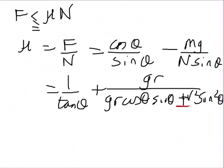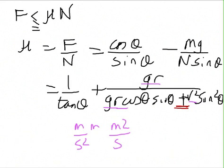That should be a plus sign, to be consistent with the correction we made earlier. Is this plausible? It's pretty messy and hard to check the functional form, but we can check dimensions. We have gr at the top and gr and v² elsewhere. G is m/s², r is metres, so gr has units of m²/s² — and so does v². Dimensions check out. As far as we can easily verify, it looks correct.